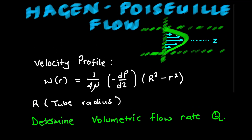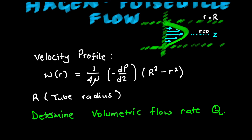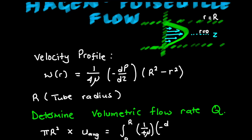Looking at this diagram, this is a parabolic profile. We are going to be determining Q, integrating from r equals 0 to r equals big R. We're going to put our velocity profile, which is 1 over 4 times mu, then this is the pressure gradient.